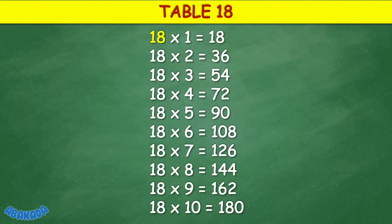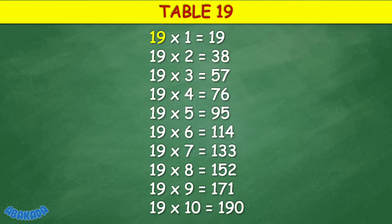Table 18: 18 times 1 equals 18, 18 times 2 equals 36, 18 times 3 equals 54, 18 times 4 equals 72, 18 times 5 equals 90, 18 times 6 equals 108, 18 times 7 equals 126, 18 times 8 equals 144, 18 times 9 equals 162, 18 times 10 equals 180.